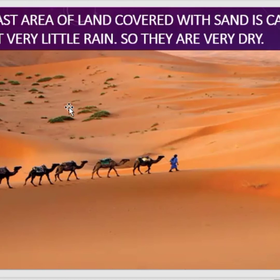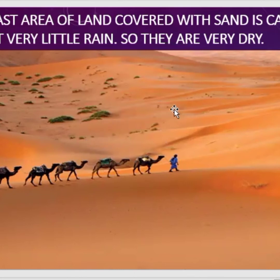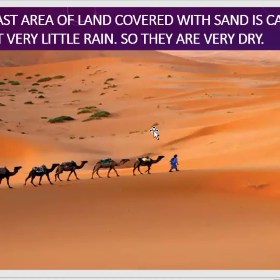The vast area of land covered with sand is called a desert. Deserts are very dry because they get very little rain. So deserts are very dry.